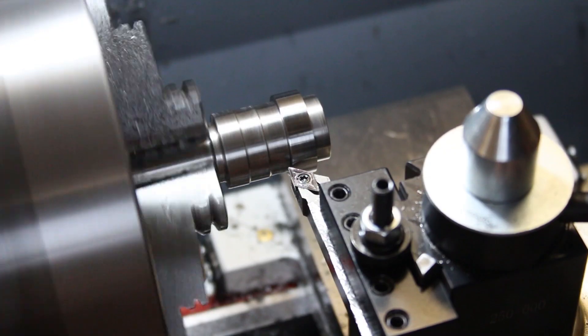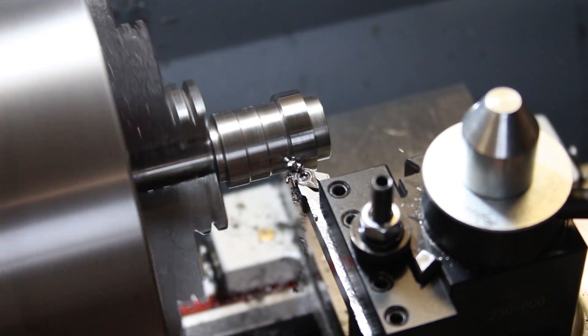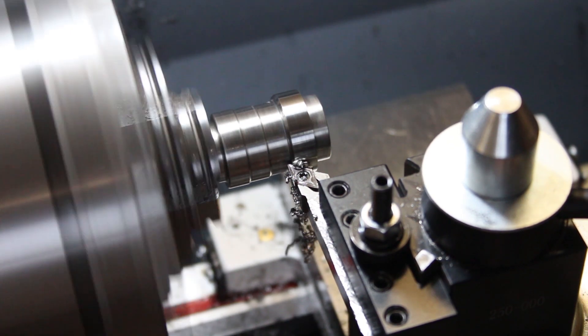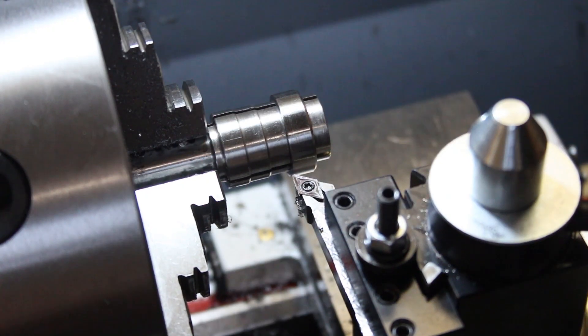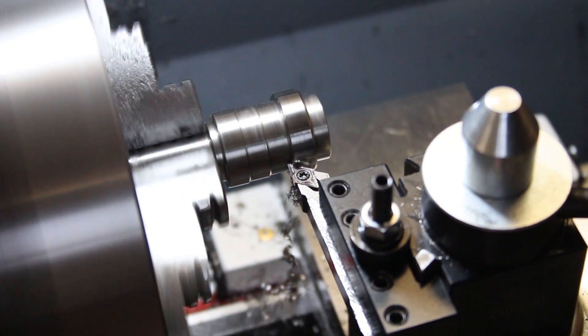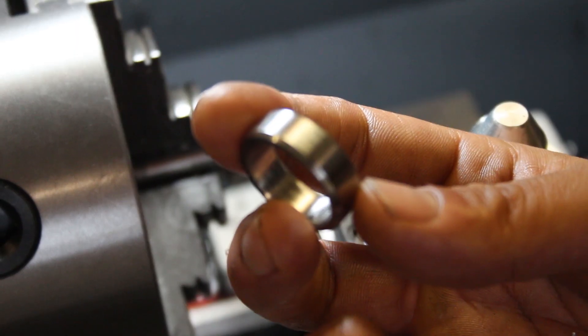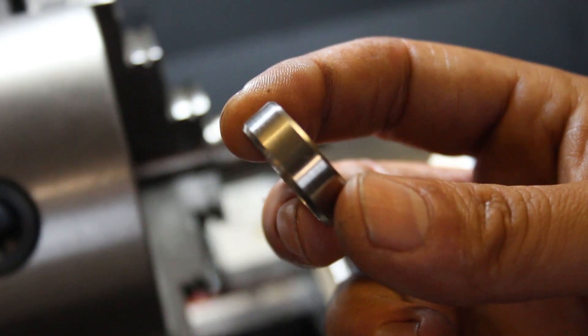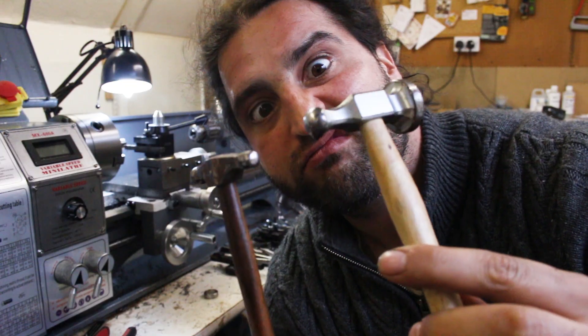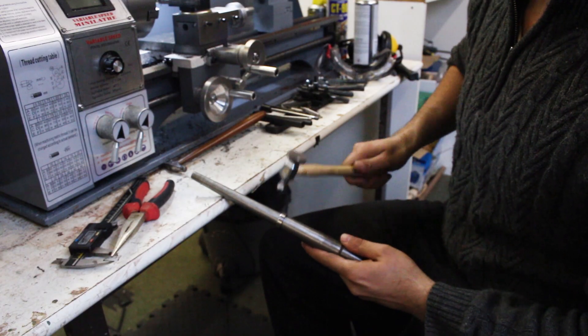Then I just used the same carbide cutter to chamfer the outside edges of the ring as well just to give it a little bit of shape. And with all the shaping done, really happy with how that turned out.